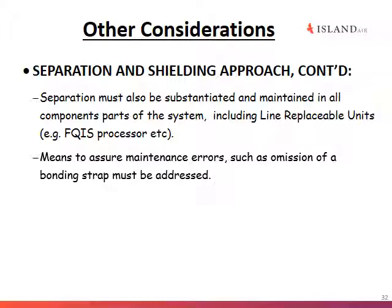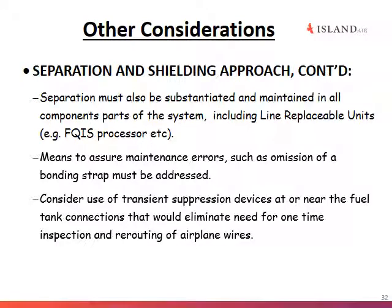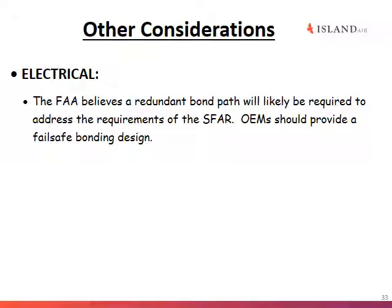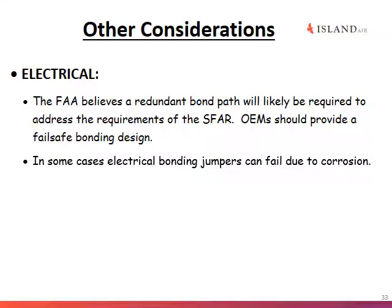We must ensure all wiring, even that included with line replaceable units, is also separate. We also need to make sure that if maintenance errors occur, there is some way to address those problems — perhaps with a second set of eyes or a different inspection. In some cases, operators choose to install transient suppression devices. It's important to have a redundant bond path so electricity can exit the fuel tanks via several different routes. Bonding jumpers must not have any corrosion, as they can fail due to corrosion.